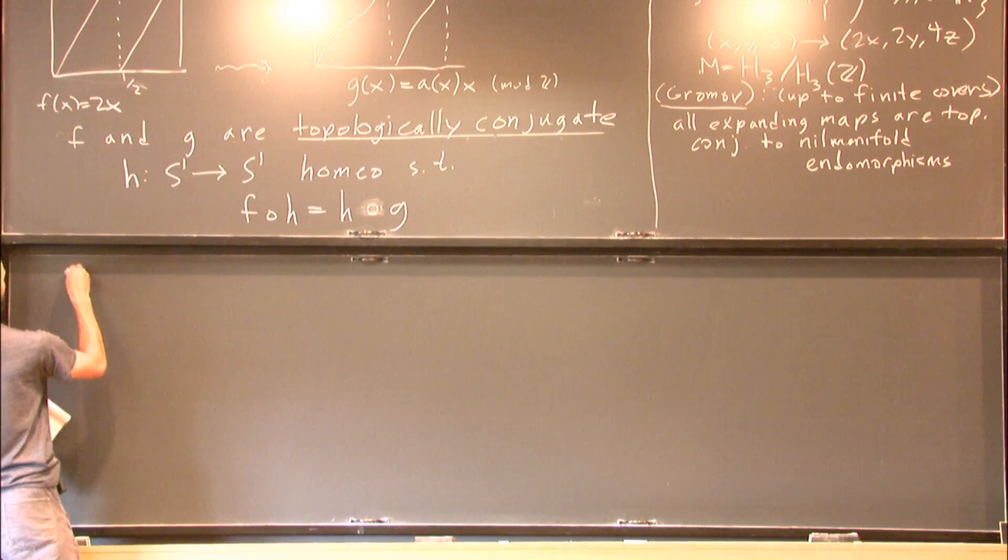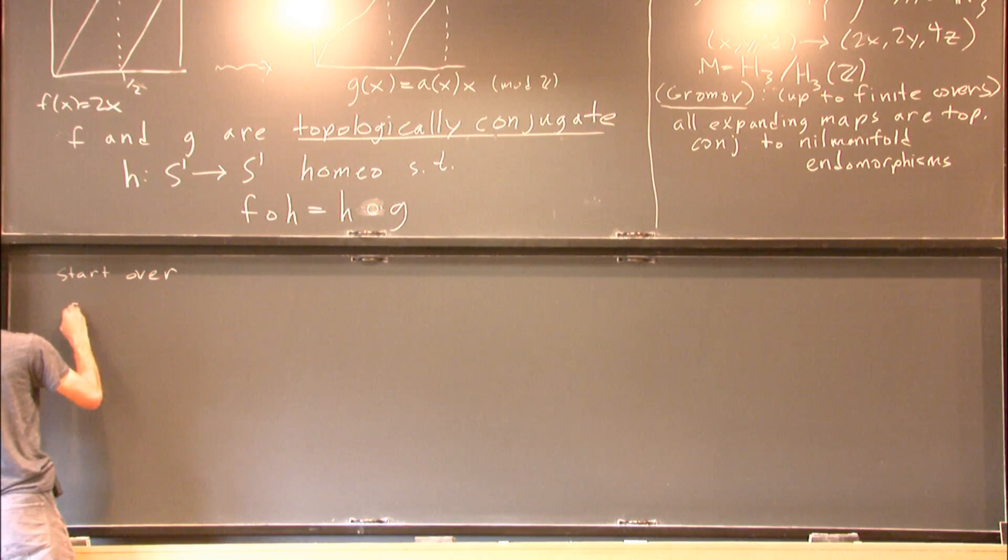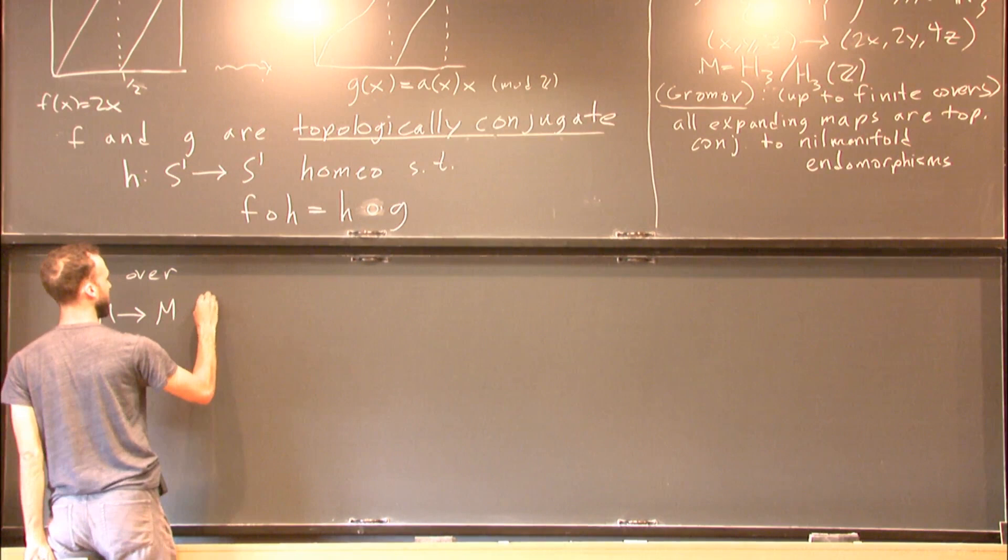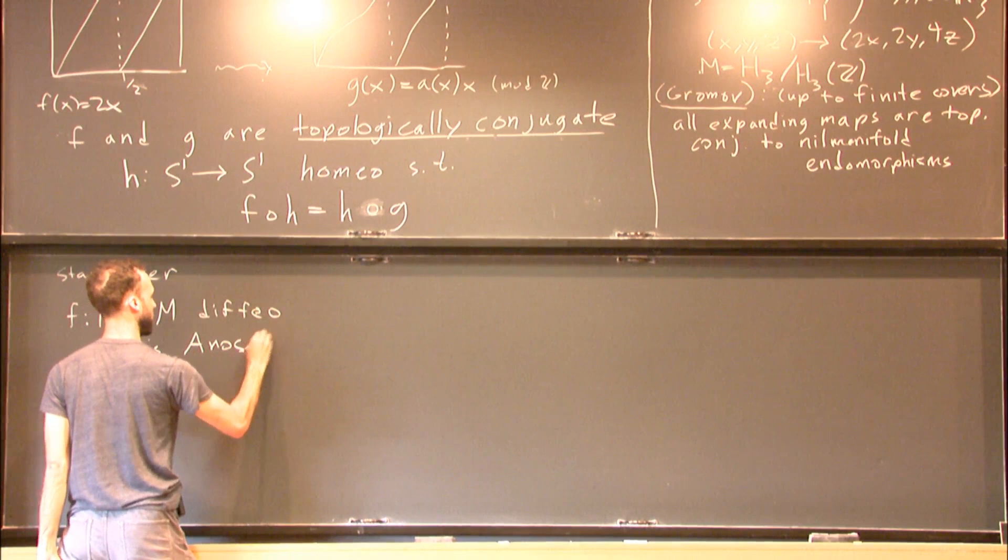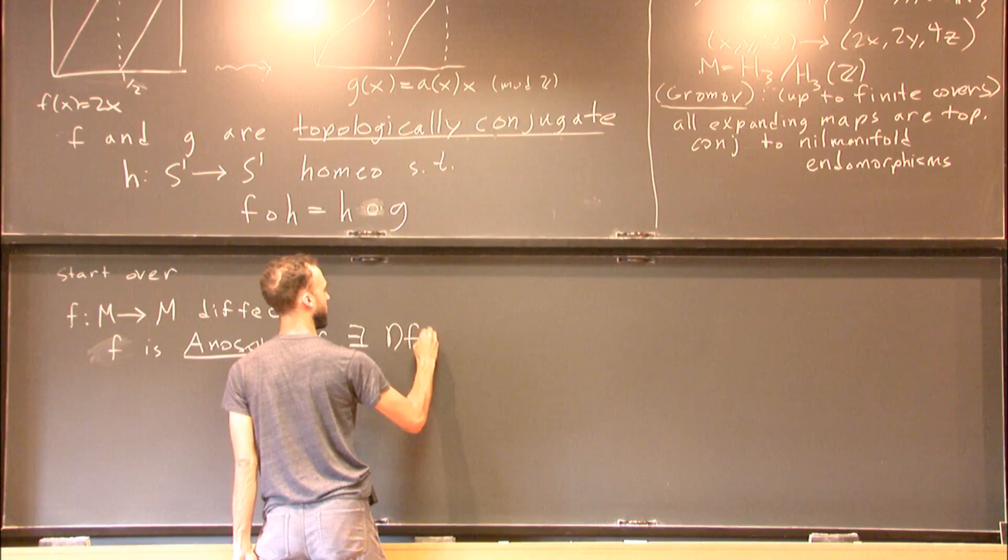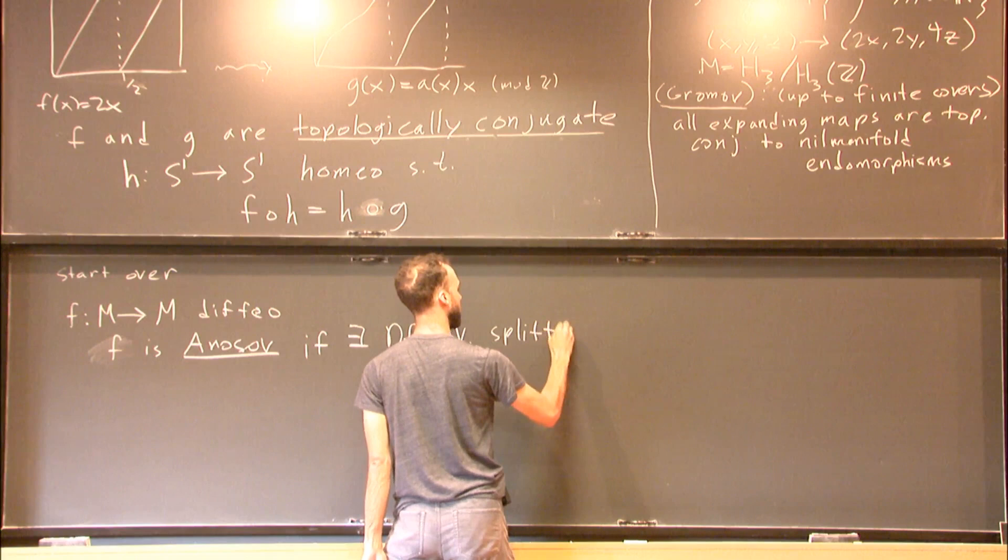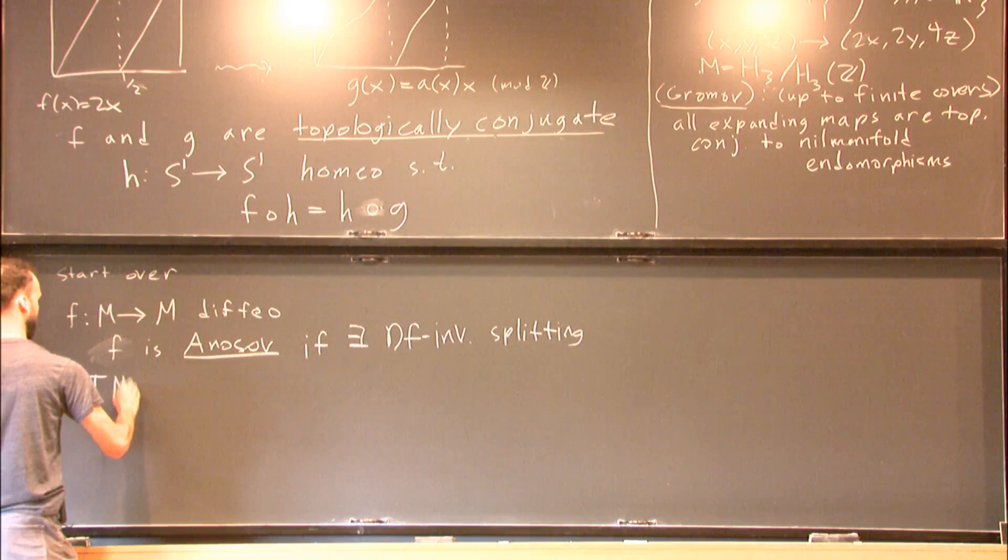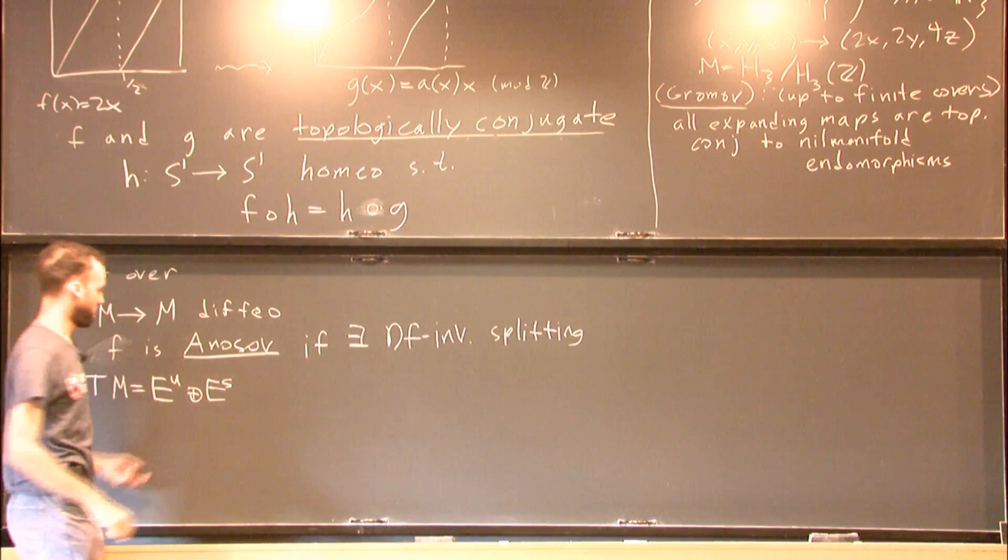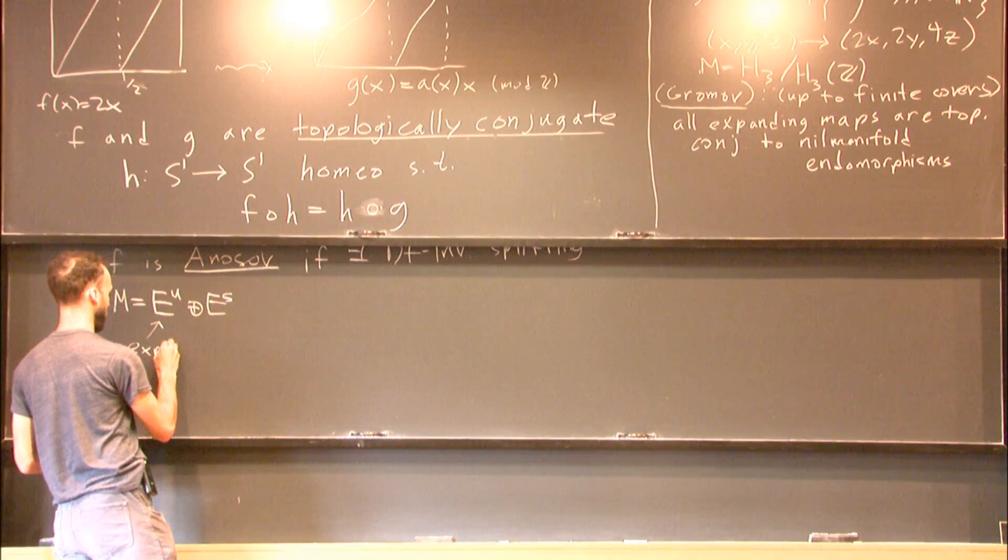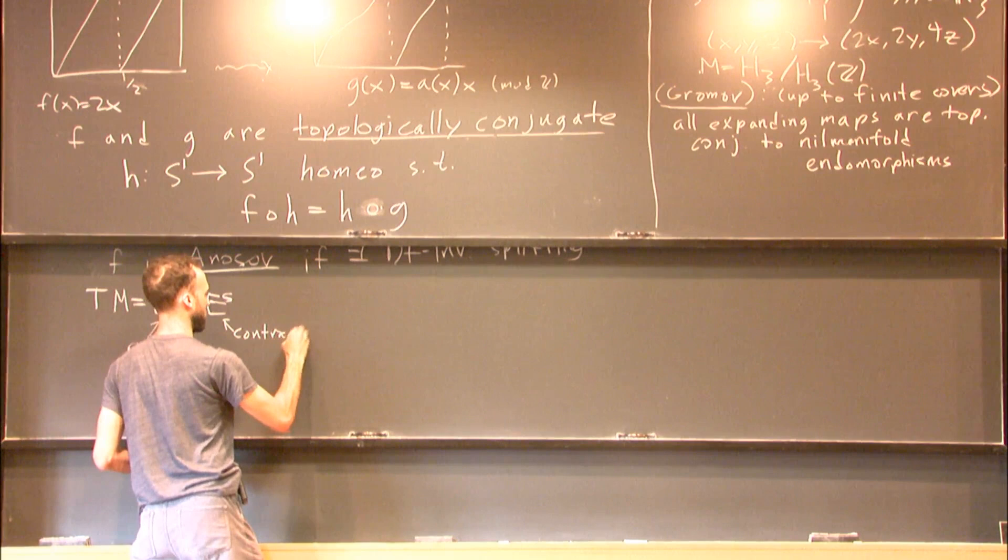So we can start over. And how do we start over? We're asked a new question. So I'll require f to be a diffeo. Say that f is Anosov if I will be very loose with this. If there exists a splitting like this, and I will write an example in a moment that will illustrate, and I will again be relatively loose with this, where this is expanded, and this is contracted.